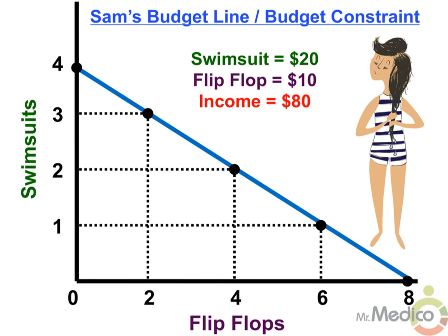To calculate the opportunity cost of one flip-flop, we do the same thing, but now it's the change in swimsuits over the change in flip-flops. If Sam goes from zero to two pairs of flip-flops, she sacrifices one swimsuit — four minus three. So the opportunity cost of just one flip-flop would be one half of a swimsuit.